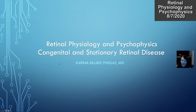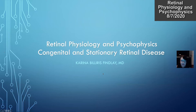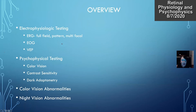This morning we're going to talk about retinal physiology and psychophysics, and then as a separate lecture we'll be going through congenital and stationary retinal disease. These are two chapters in your basic clinical science books. Electrophysiology testing includes ERG, EOG, and VEP. This has been going on since the 1940s; EOG came along a little bit later in the 1960s. Basically we're testing electrical responses from different tissues.